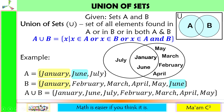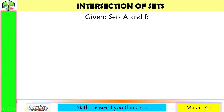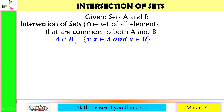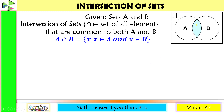The second set relationship is the intersection of sets. Given sets A and B, intersection of sets, denoted by this symbol (concave downward), is the set of all elements that are common to both A and B. The set builder notation is: A intersection B is the set of all X such that X is an element of A and X is an element of B. The Venn diagram for intersection of sets shows just the common elements — this middle part.